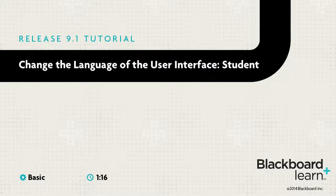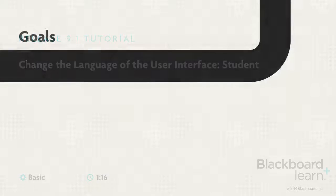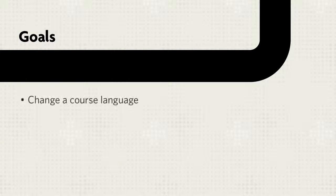Language preference settings control the text displayed by the Blackboard Learn user interface. Language preferences are defined at the system, course, and user levels. This tutorial will show you how to change the preferred language as a student.